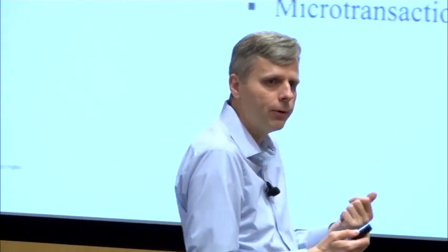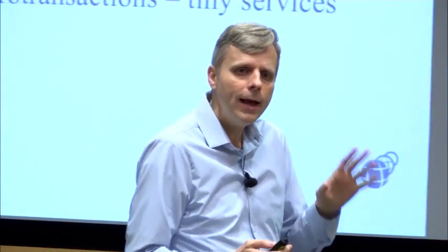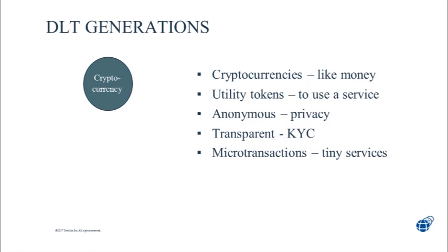The history of distributed ledgers has had four generations. Each one has built on the previous one, and each continues to evolve. We started with cryptocurrency — Bitcoin — which was a revolutionary idea: actual money with no government creating it, no one person can destroy it, and no one person is in control. That's what we started with, and it was revolutionary.